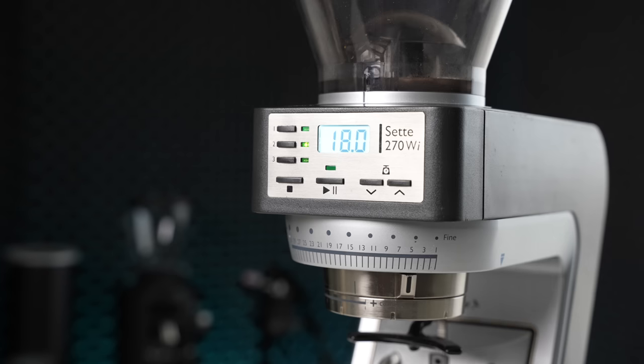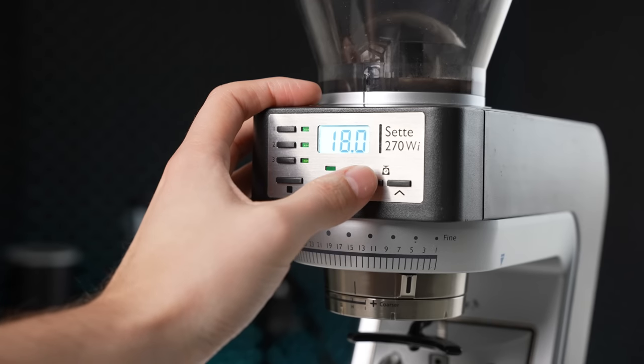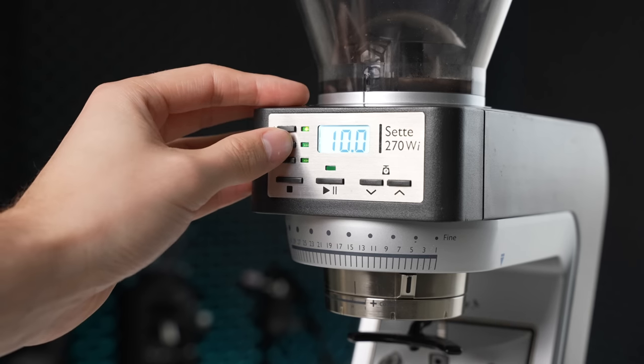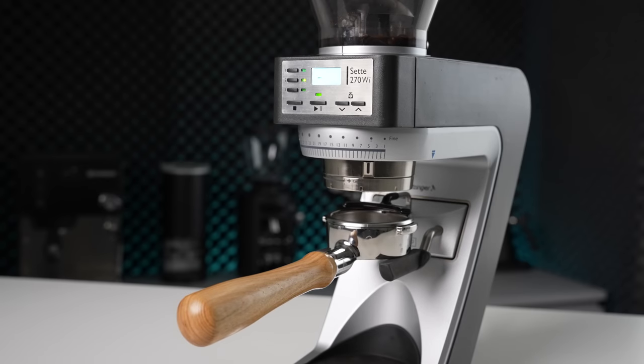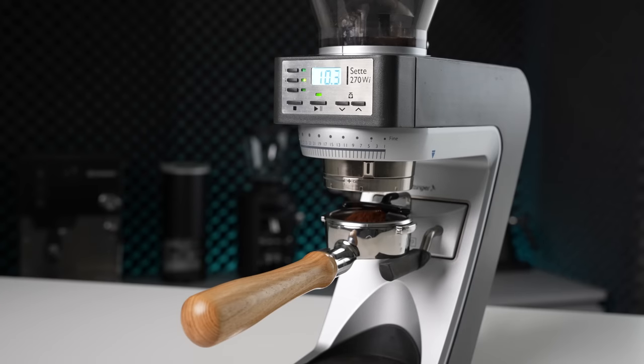Moving on to the user interface and user experience as a whole, things were pretty straightforward. Two buttons on the right side are used to adjust the programmed grinding time or, in the case of the 270Wi, the weight. On the 270 models you also get three buttons on the left side where you can program in three different recallable doses, for example if you want to switch between a single, double, and triple shot basket. The start button starts the grinding and also allows you to pause the grind in order to settle the grounds before continuing, while a stop button will cancel the grind entirely.